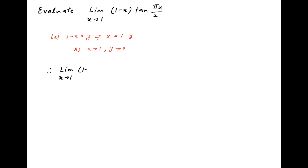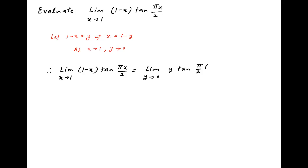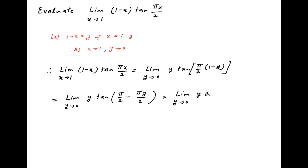Therefore the given limit can be written as limit y tending to 0, y times tan of pi upon 2 times (1 minus y). This is equal to the limit as y tends to 0, y times tan of (pi upon 2 minus pi times y upon 2). Now tan of (pi upon 2 minus an angle) is equal to cot of that angle, and therefore the given limit is equal to limit y tending to 0, y times cot of (pi y upon 2).